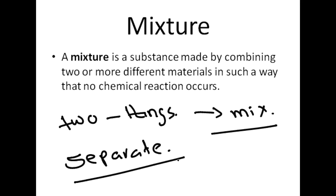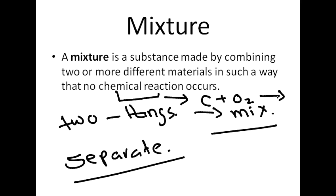In a chemical reaction, a new product is formed. For example, if we take carbon and oxygen and react them, we get carbon dioxide — a new product is created, so that is a chemical reaction. But in a mixture, no new product is formed and no chemical reaction takes place.